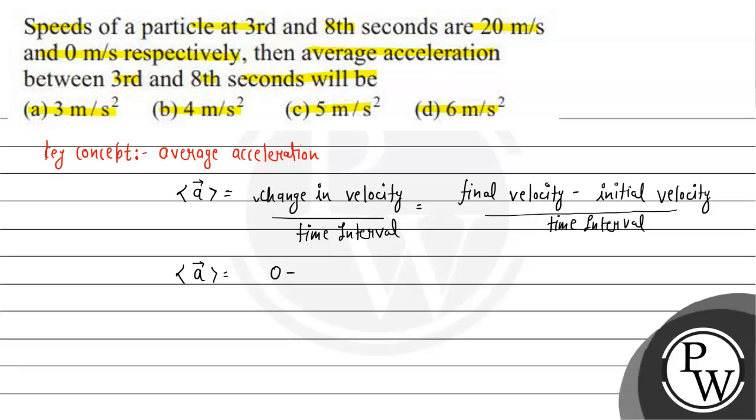The final velocity is 0 minus initial velocity, which is 20 meters per second, divided by time taken. The time difference is 8 seconds minus 3 seconds, which gives minus 20 by 5, which equals minus 4 meters per second squared. This is average acceleration, but the question asks for magnitude. The magnitude of the average acceleration is 4 meters per second squared.